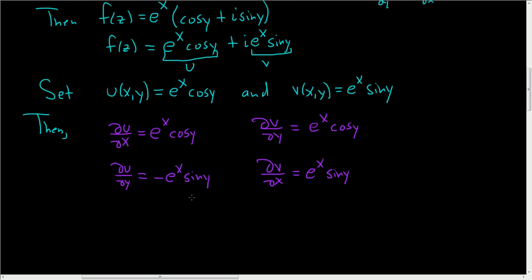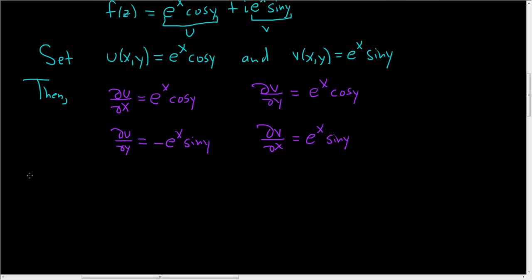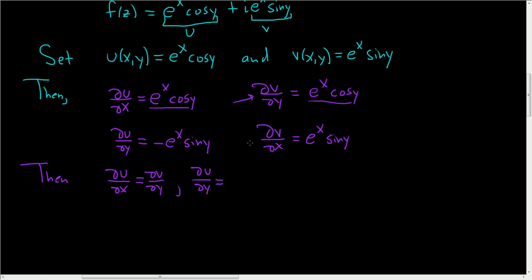So now we will check that the Cauchy-Riemann equations hold. For every complex number, we have that ∂u/∂x is exactly the same as ∂v/∂y — these are exactly the same. And we also have that ∂u/∂y = -∂v/∂x. Notice the only difference between these two is a negative sign. So the Cauchy-Riemann equations hold for every complex number.